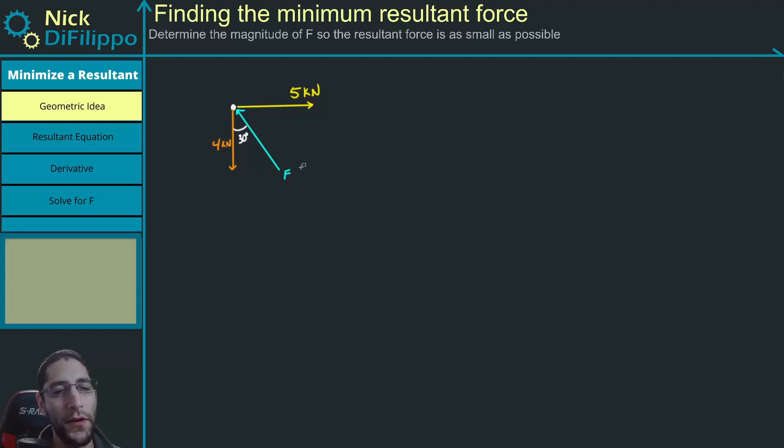In this problem, we want to determine the value of F to make our resultant as small as possible, and we also want to determine what our resultant magnitude is. I'm going to show you first geometrically what this problem is asking, how you can solve this geometrically, and then a more structured approach to solving this problem.